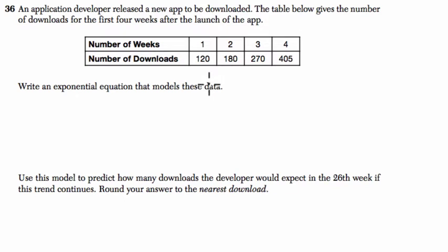They want us to write an exponential equation that models this data. I think the best approach is to look at what we're multiplying by each time. Every time we go up once in the number of weeks, we're multiplying by 1.5 every single time. That is our base, 1.5 to the x.